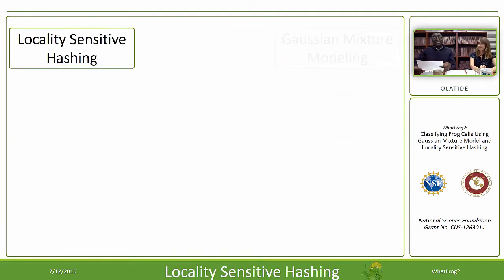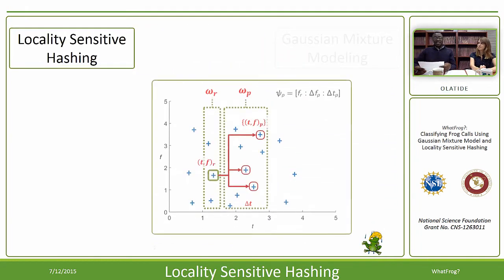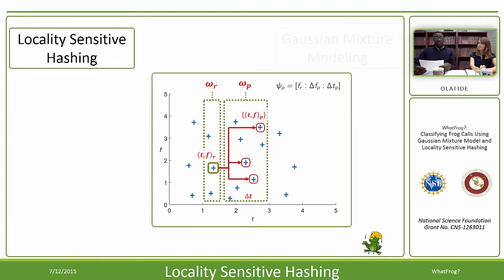The process of locality-sensitive hashing defines the feature vector as hash values from the relationship between the landmarks from both the reference and kernel windows. The relationship is defined as a combination of the reference frequency and the difference between the reference and kernel landmarks in the frequency and time domain.